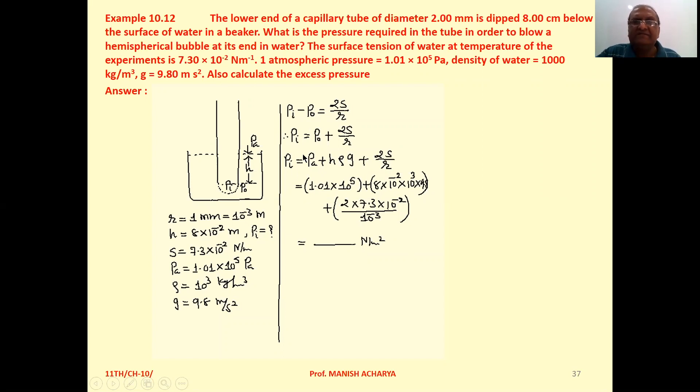So the inside pressure Pᵢ = Pₒ + 2S/R. But here the outside pressure is the pressure exerted by the liquid column of height H plus atmospheric pressure. So we can write Pᵢ where Pₒ is replaced by Pₐ + Hρg.